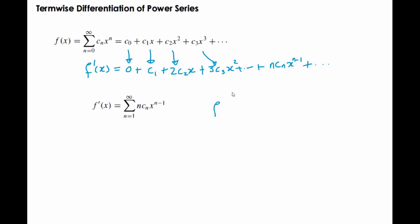So if it was a second derivative, we expect it to be f''(x) for instance equals n equals 2 to infinity, and then you'll have n(n-1)cₙx^(n-2), and it will continue in that manner. So that's basically termwise differentiation of a power series.